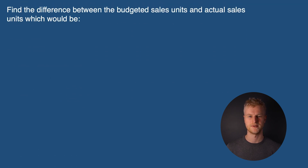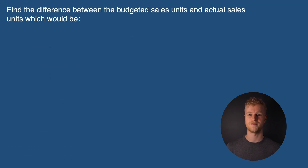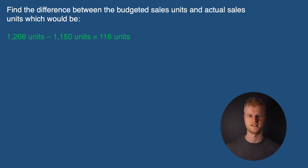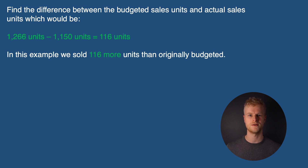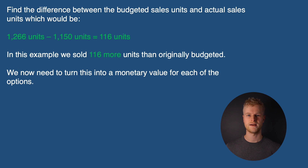The first step under any of these methods will start off the same: find the difference between the budgeted sales units and the actual sales units, which would be 1,266 minus 1,150 to give a difference of 116 units. This means we sold 116 more units than originally budgeted for. We now need to turn this into a monetary value for each of the options.